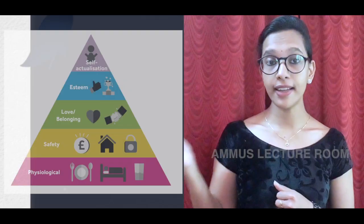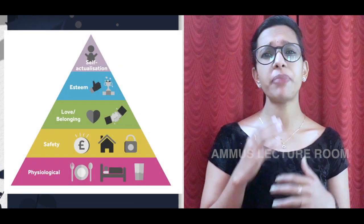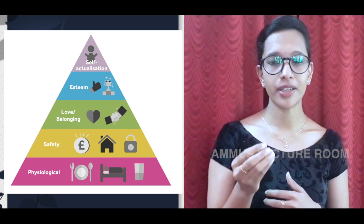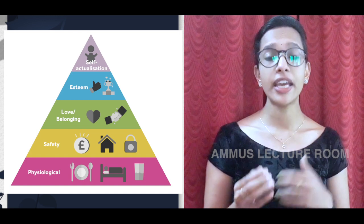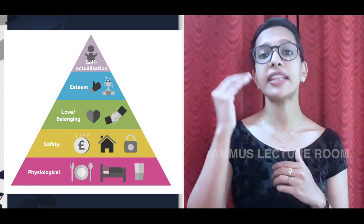The theory is represented in a pyramid shape. The lowest level of need is also the most powerful motivator. The first level is physiological needs — these are the basic needs: food, water, sleep, clothes, etc.